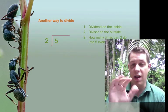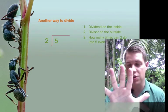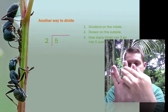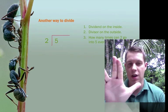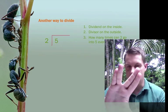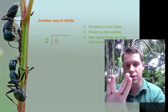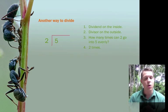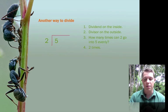And now we need to think how many times can 2 go into 5 evenly. What I mean by that is that if I have 5 fingers and I'm going to make groups of 2, I can put these 2 fingers together, I can put these 2 fingers together. But I don't have enough fingers to make another group of 2. So I can only make 2 groups.